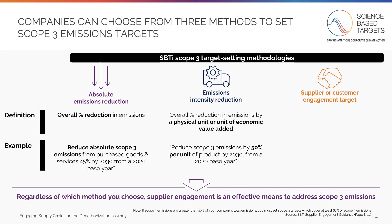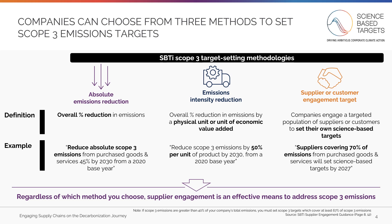Finally, companies can set supplier or customer engagement targets, meaning they will engage their suppliers or customers to set their own science-based targets. For example, a company could commit to having suppliers covering 70% of emissions from purchased goods and services set science-based targets by 2027. Regardless of which method you choose, supplier engagement is an effective means to address your Scope 3 emissions.